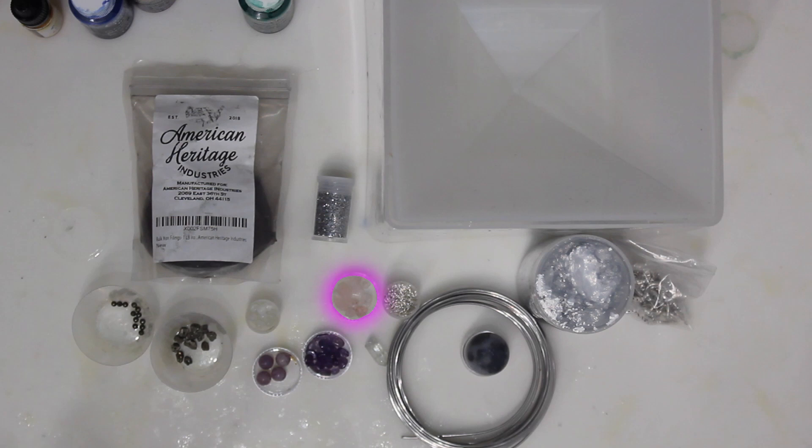Iron filings, silver foil, silver colored aluminum wire, moon symbol charms, and the moon.